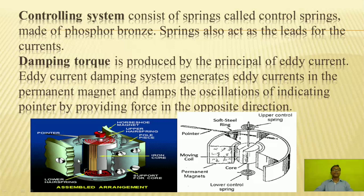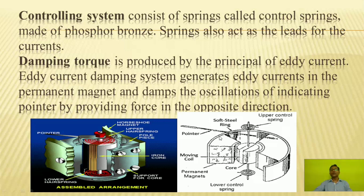In this diagram, you can see the internal construction. The pointer is shown here. This is the horseshoe magnet. There are upper springs and lower springs, supports for the core, and the iron core is shown. In the black and white diagram, these two springs are shown — springs are used for the controlling system and as leads for the currents. The moving coil is shown here, along with the permanent magnets. The pointer and soft steel ring are also indicated.